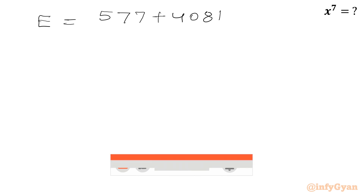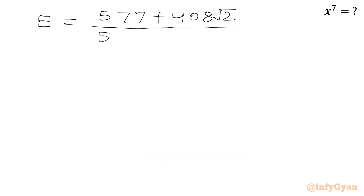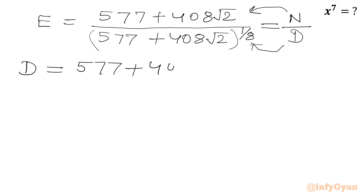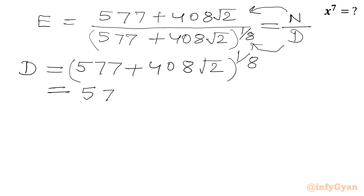Let us come back to our problem. I will write expression e equal to (577 plus 408 root 2) over (577 plus 408 root 2) to the power 1 over 8. I will call this the numerator and this the denominator. So we will calculate the 8th root as our denominator; the numerator is 577 plus 408 root 2. I will write (577 plus 408 root 2) to the power 1 over 8, which we can further write as (577 plus 408 root 2) to the power half, whole power 1 over 4.